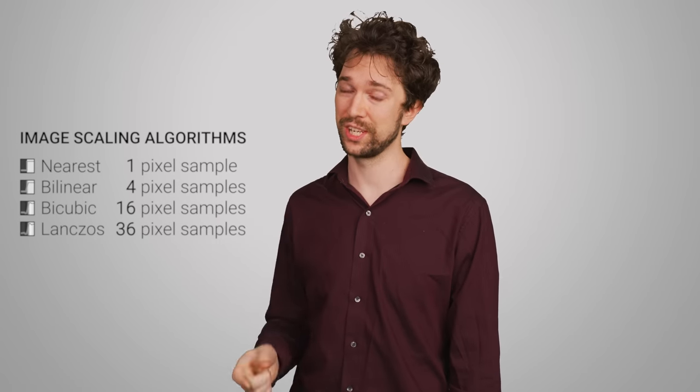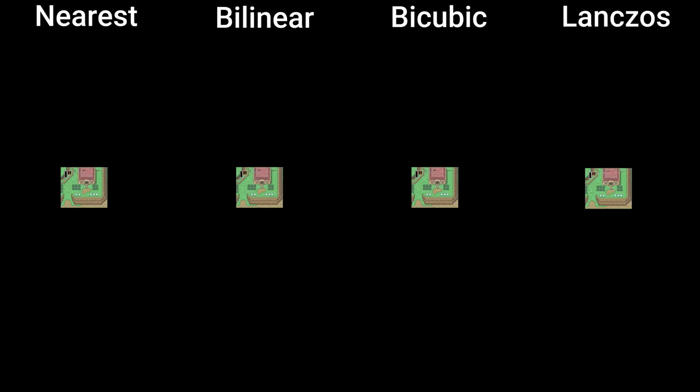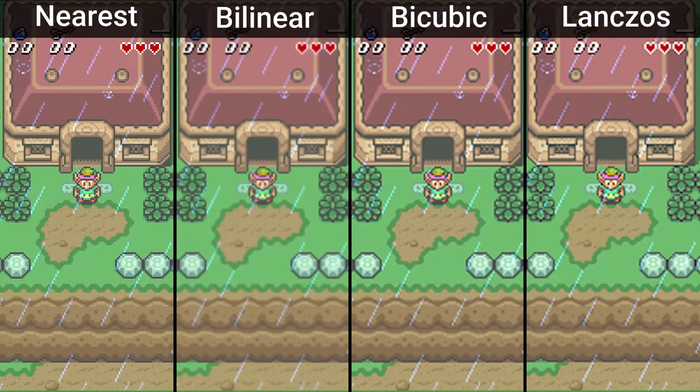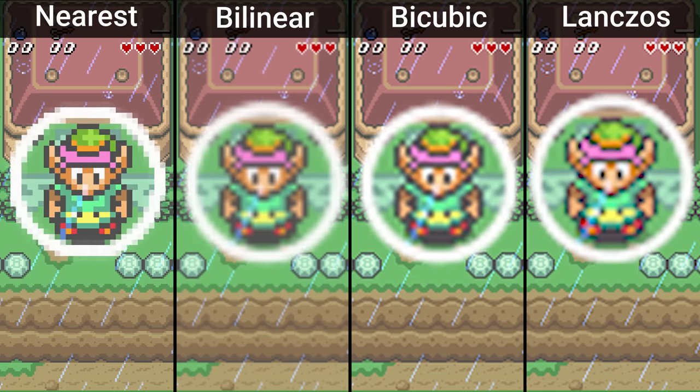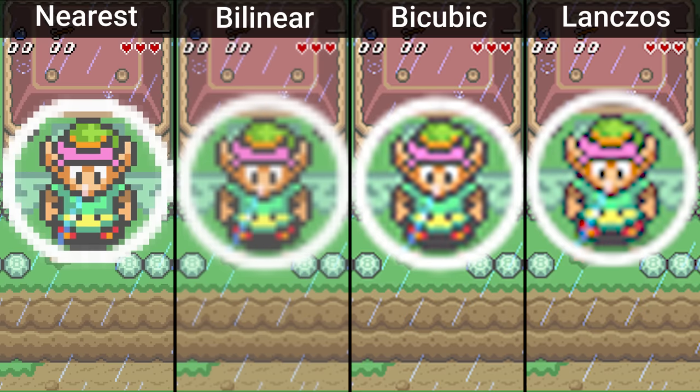But back to the topic at hand. Assuming that each of these algorithms can work in real time, which one actually looks the best? Well, see for yourself. And immediately you can see that only Nearest Neighbor can deliver the perfect sharp pixels that make pixel art look good. All the others just kind of blend the pixels together, which blurs the image.